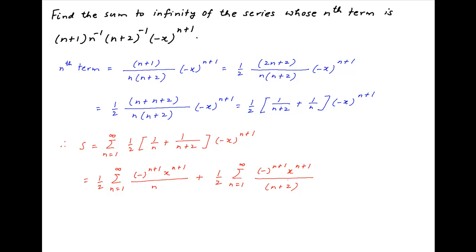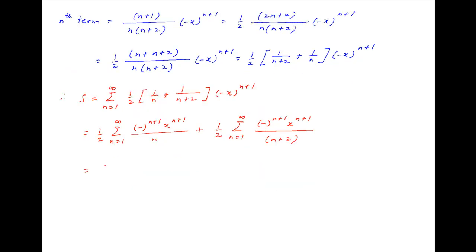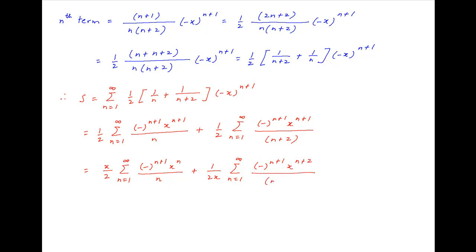Now multiply and divide both terms by x. Therefore S can be written as x upon 2 times summation n equals 1 to infinity of minus raised to the power n plus 1 times x raised to the power n divided by n, plus 1 upon 2x times summation n equals 1 to infinity of minus raised to the power n plus 1 times x raised to the power n plus 2 upon n plus 2.